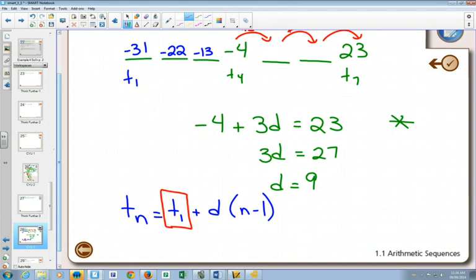Do we know d? Yes. We figured out d was nine. This is what we want to find, so I'll just keep it as term one. Do we know any other terms?